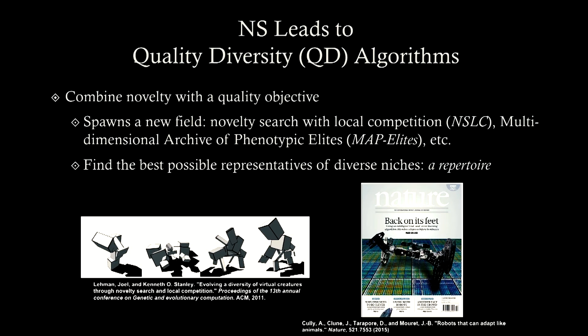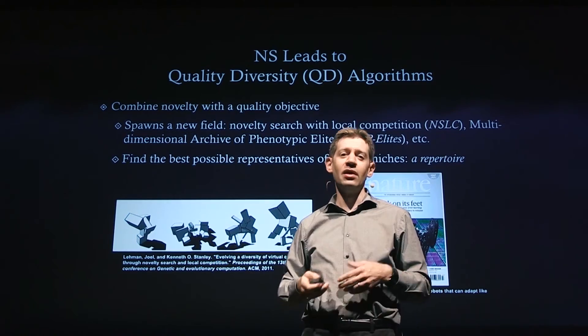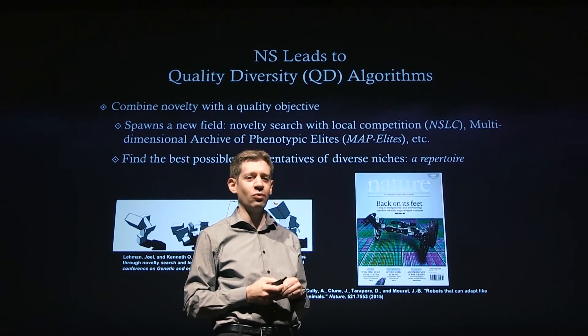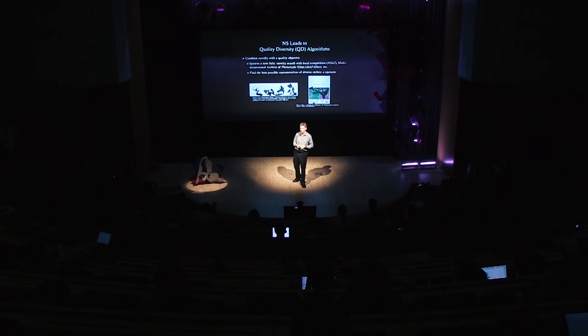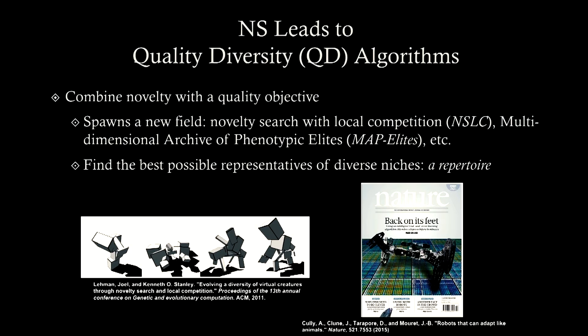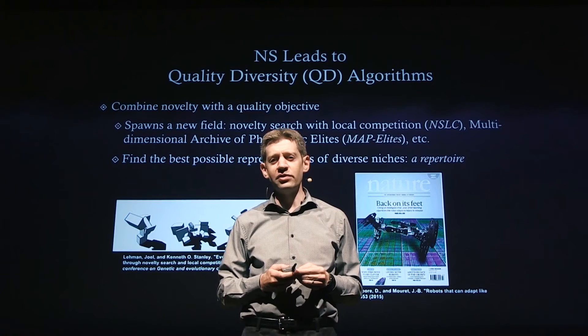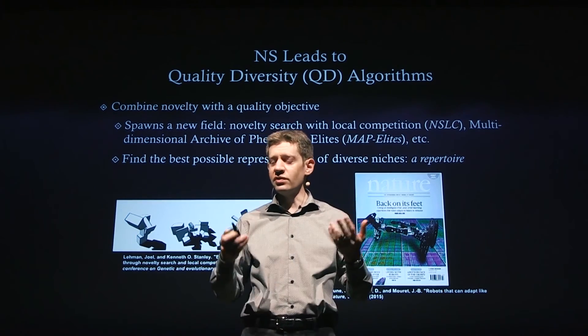What's interesting about these algorithms is they're starting to look more like nature, because what they return is not just a single result — they return what we're starting to call a repertoire, lots of different things that are interesting. In a single run you can get all these different creatures — dozens of different walking creatures. On the cover of Nature is a quality diversity algorithm called MapElites, which discovered a whole repertoire of gaits for a particular robot. If the robot breaks, it can go into its repertoire and find a gait suitable to its new physical form. There are practical implications to doing this kind of research.